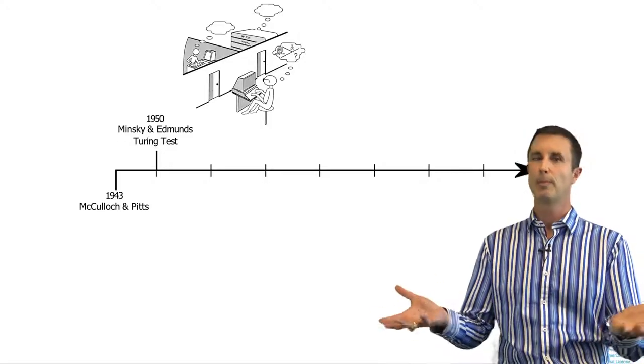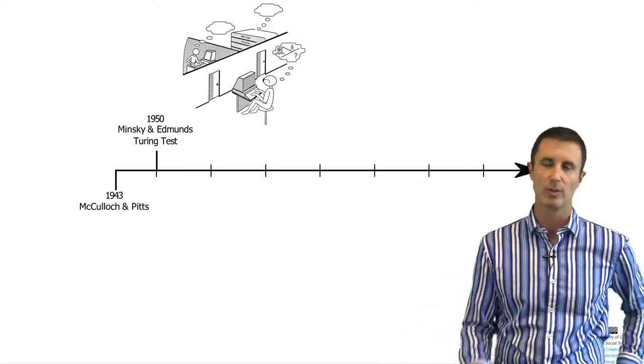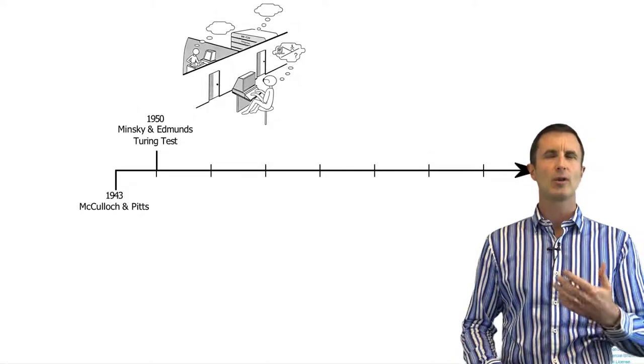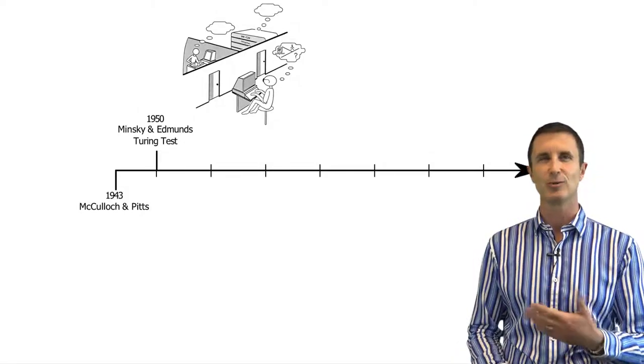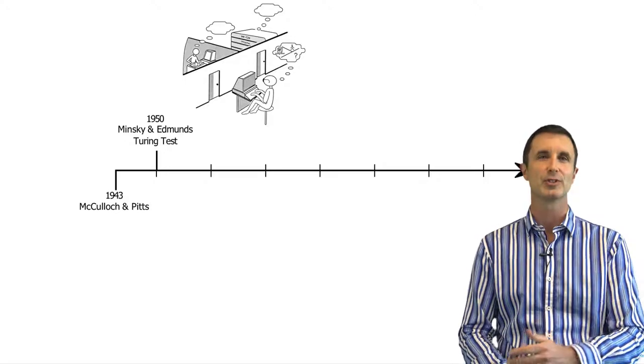This is a test of whether a machine is intelligent if you put it behind a screen and someone interacting with that machine can't tell the difference. This was very much based on language. There are limited versions of the Turing test applied to machines. No one's really passed the full version of the Turing test, no machine has.